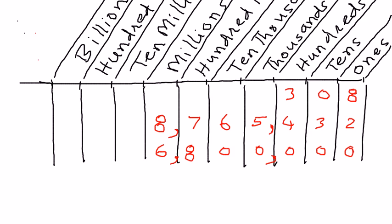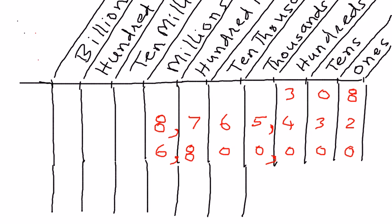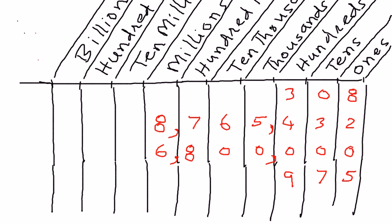Let's take a few more examples to use this place value chart a little bit more. Let's say I have a number nine hundred and seventy-five. Five is in the ones place, seven is in the tens place, nine is in the hundreds place, so therefore we can read this number as nine hundred and seventy-five.